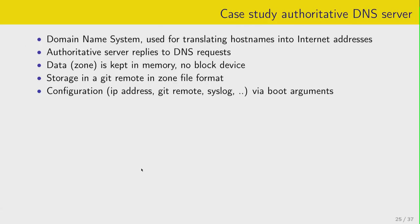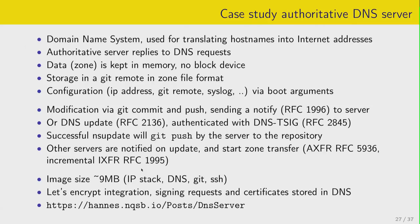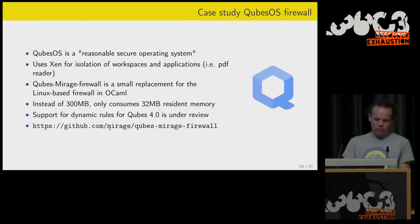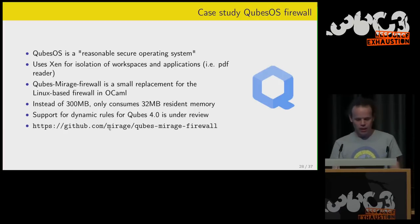Another case study is an authoritative DNS service, for which I recently wrote a tutorial. Another is a Firewall for QubesOS — a security-focused OS that uses Xen for isolation of workspaces and applications. The QubesMirage Firewall is a tiny replacement for the Linux-based firewall, written in OCaml, using only 32 megabytes of memory instead of roughly 300 megabytes. Support for dynamic firewall rules as defined by Qubes 4.0 is under review.